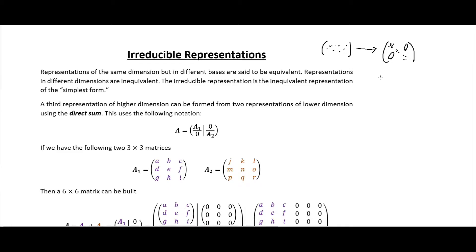What that's going to do is take some n-dimensional space and turn it into something that has an m-dimensional subspace plus some s-dimensional invariant subspace. We essentially want to partition our entire space into two subspaces: one of which is invariant, and the other from which we can get our irreducible representations. To do that, the first thing I'm going to introduce is the idea of the direct sum.